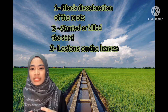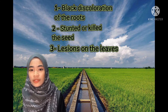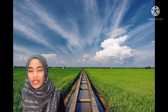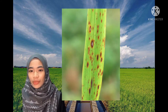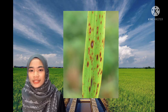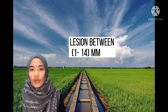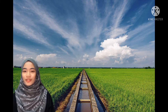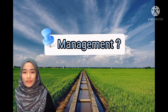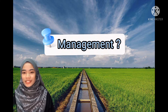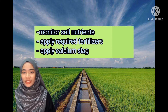In other plants, the lesions on the leaf are light brown to grey in the centre and have a reddish brown margin. Lesions vary between 1mm up to 14mm long depending on cultivar. For management, improving soil fertility is the first step in managing brown spot. To do this, we have to monitor soil nutrients regularly and apply the required fertilizer.